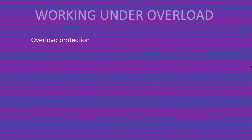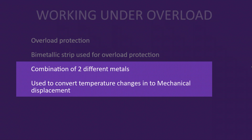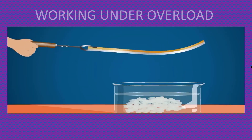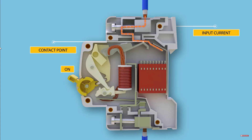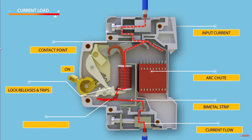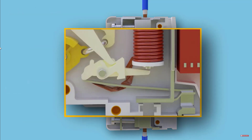MCB has two functions. The bimetallic strip is used for overload protection. A bimetallic strip is a combination of two different metals and is used to convert temperature changes into mechanical displacement — that is, if heated, the bimetallic strip bends, and if the temperature becomes normal, it returns to the same position. If the current passing through the MCB is more than the rated current, temperature starts to increase. This overload protection is a time-taking procedure. For small variations, the bimetallic strip won't activate suddenly. If the higher overload current continues to flow for some time, the bimetallic strip starts to bend, triggering the tripping mechanism — the fixed and moving contacts — and the circuit breaker will trip.